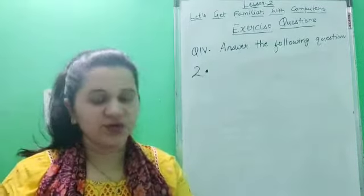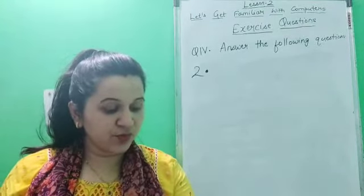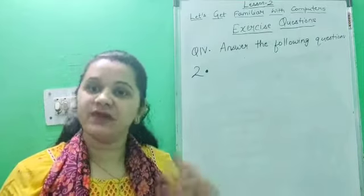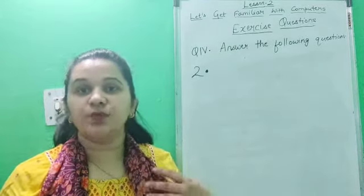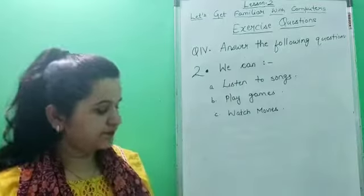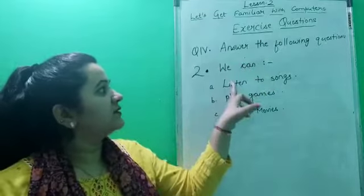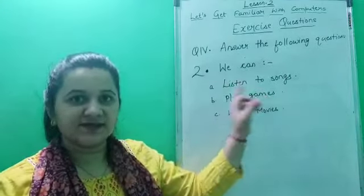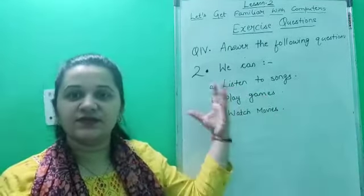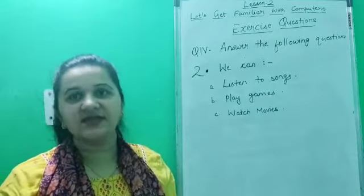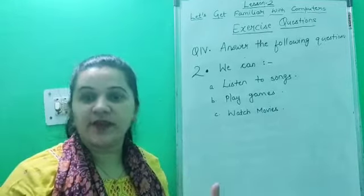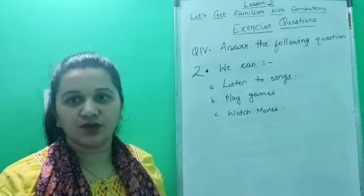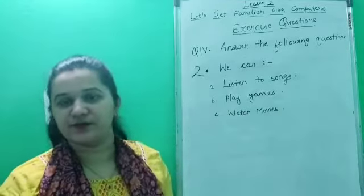Now let us proceed to the next question — question number two: what can you do with computers at home? At various places computers can perform various functions. So here you have to write down what things you can do on a computer at home. The answer is: we can listen to songs, play games, watch movies. You can also write drawing and painting. You can write the answer in your own words, or take help from here.